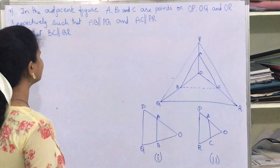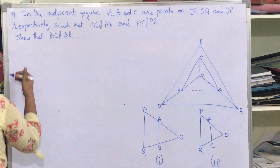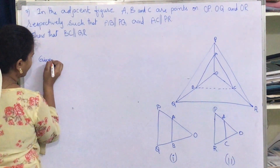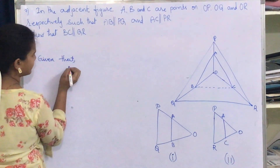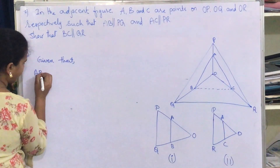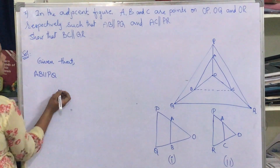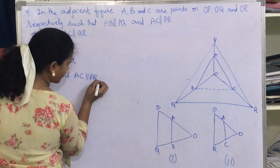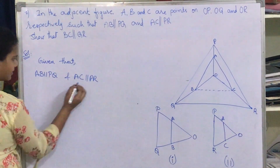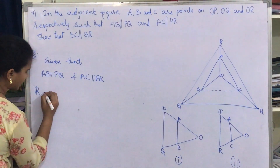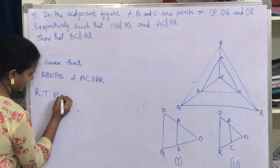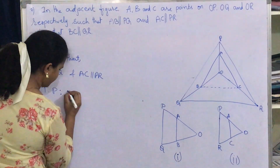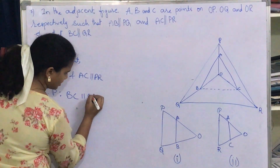So we have: AB is parallel to PQ and AC is parallel to PR. Let's write down the given data. Given that AB is parallel to PQ and AC is parallel to PR. Required to prove: BC is parallel to QR.